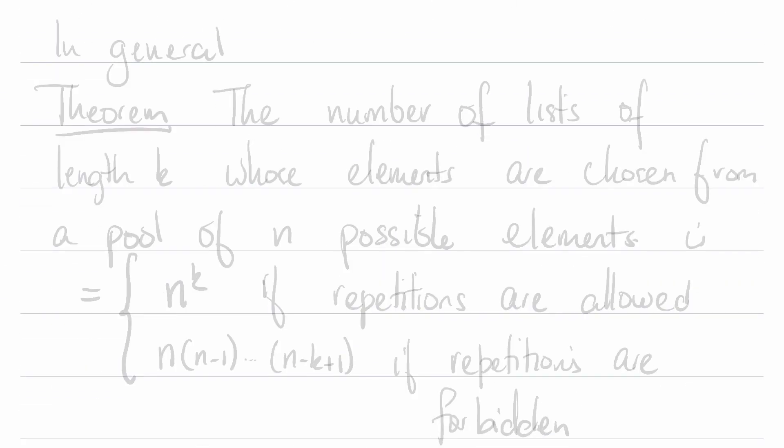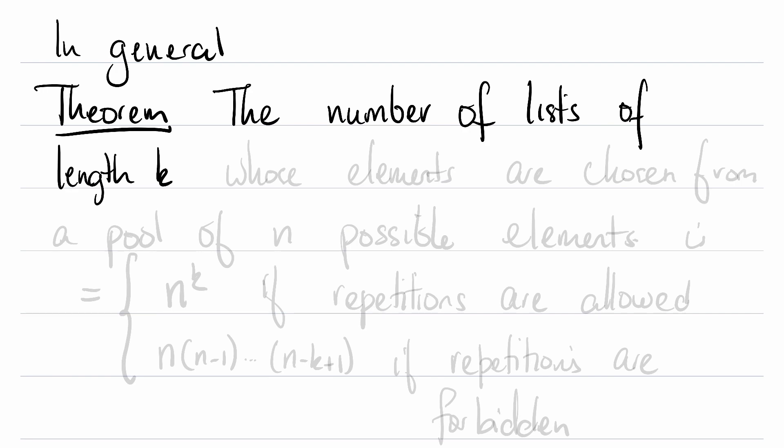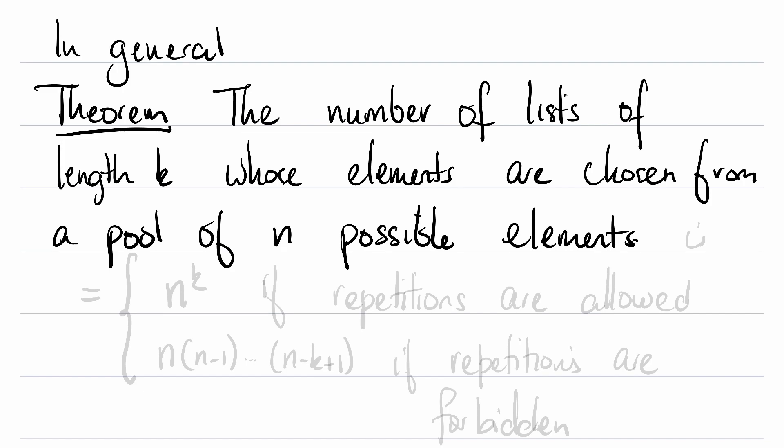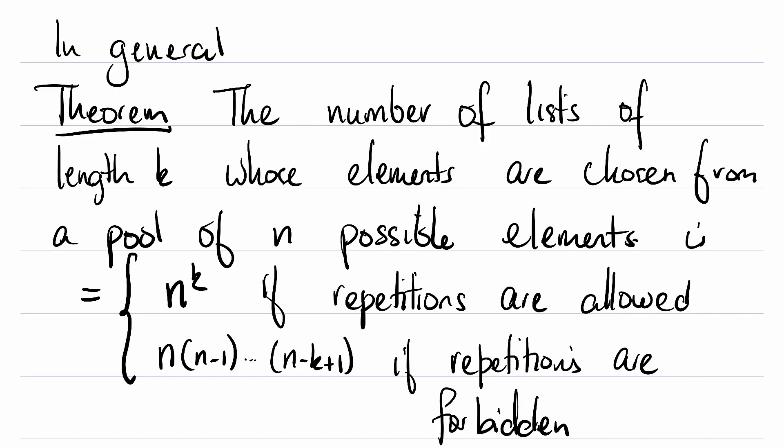So in general, what we have is a theorem, which is a true mathematical statement of relative importance. The number of lists of length k whose elements are chosen from a pool of n possible elements is n to the k if repetitions are allowed, and n times (n minus 1) times (n minus 2) all the way down to (n minus k plus 1) if repetitions are forbidden.